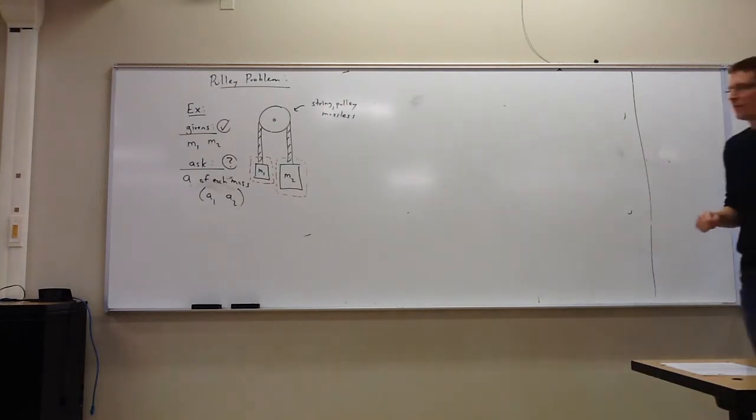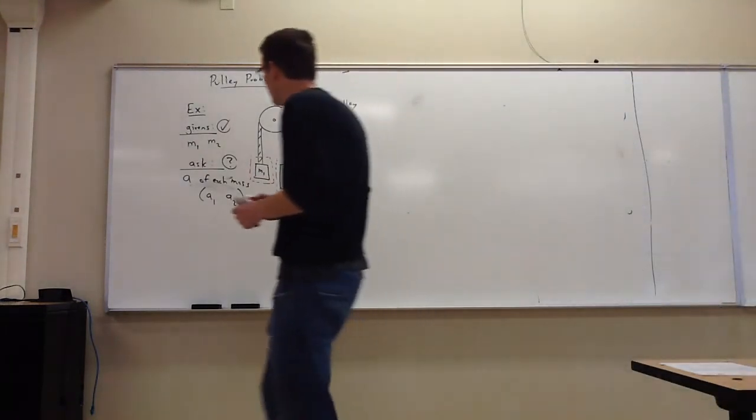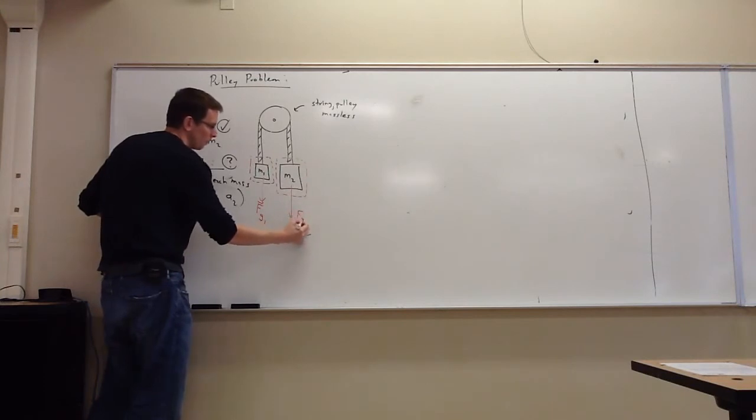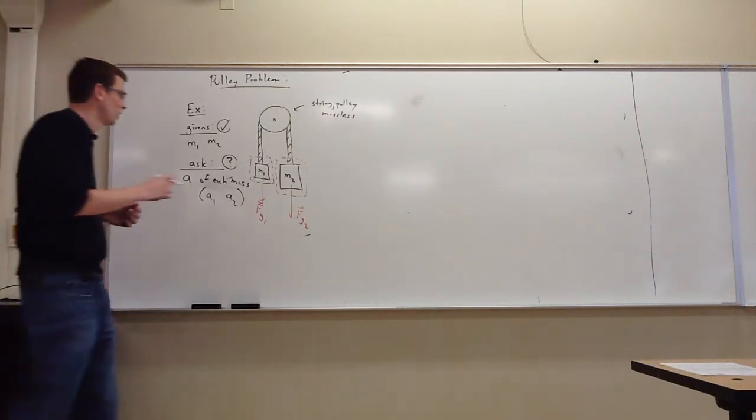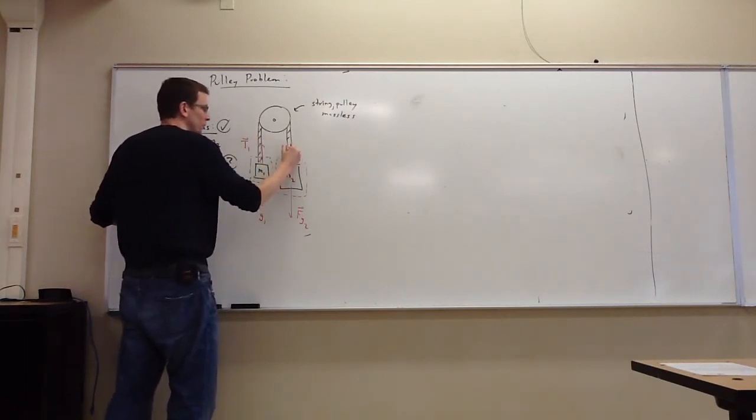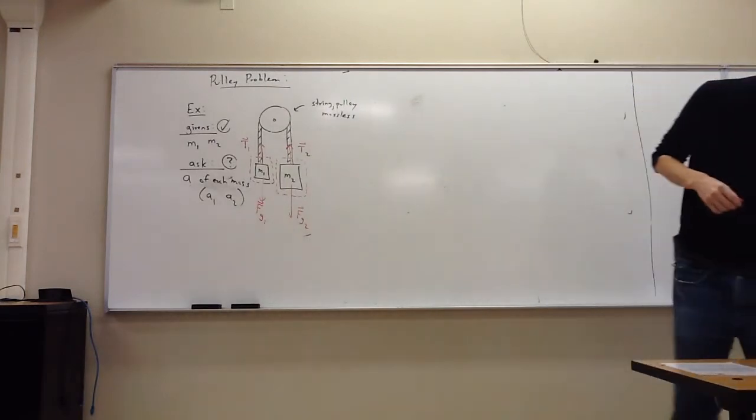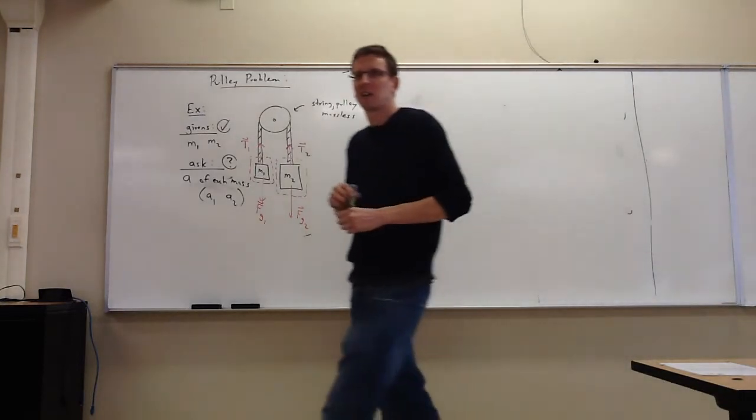Step two, identify the forces that act on that. Well, we have the force of gravity that's going to pull down on each one of these. And of course, there's going to be a string attached to each one. So remember, tension always pulls, never pushes. So we make sure that it pulls. The tension points away from the object. Step two, done.